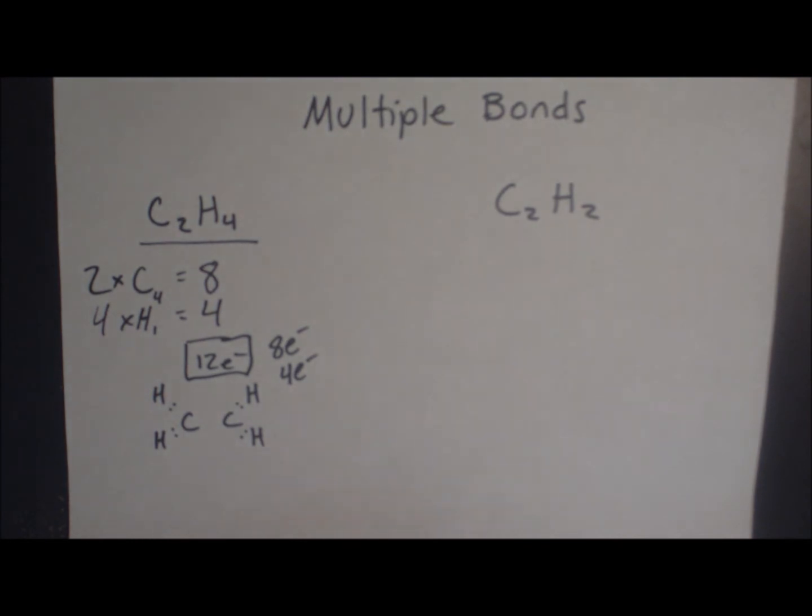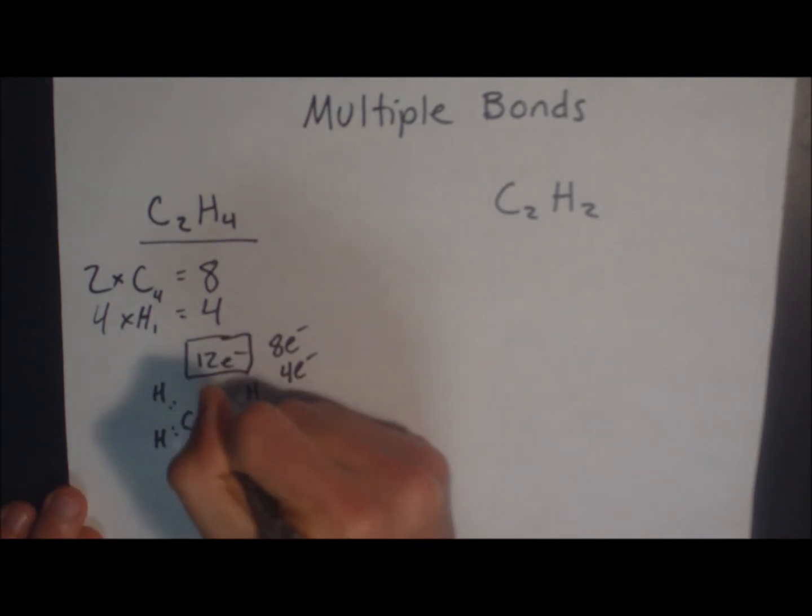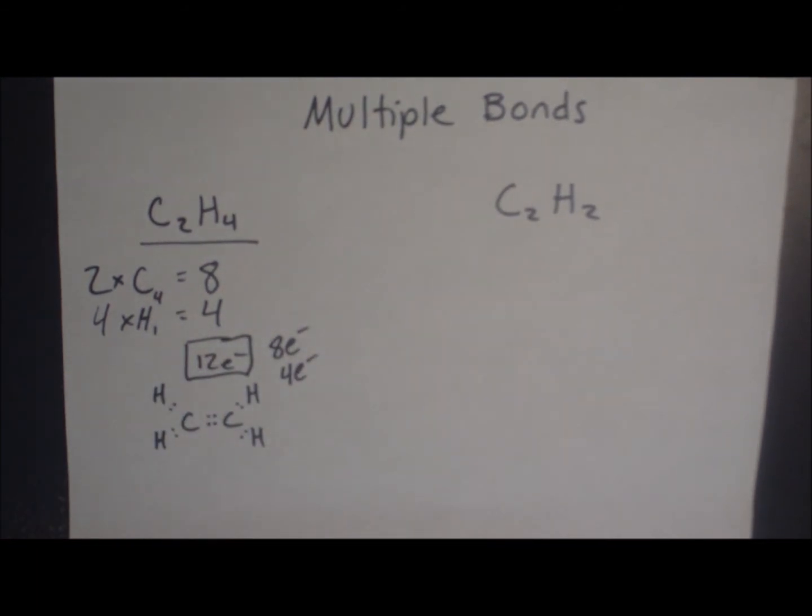And each carbon only has 4 electrons on it right now. Well, to satisfy our octet rule, what we'll need to do is add 4 more electrons to each carbon. Well, since we only have 4 to play with, we're just going to add them right there.